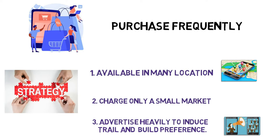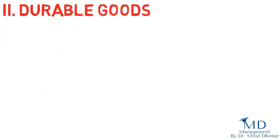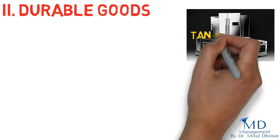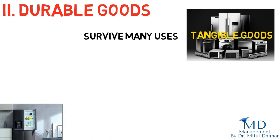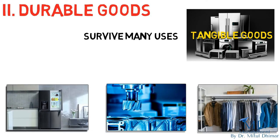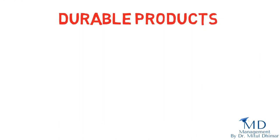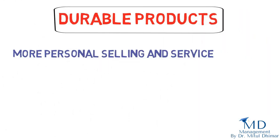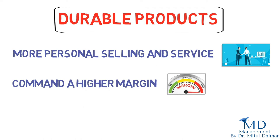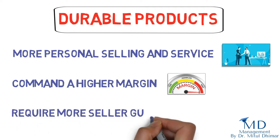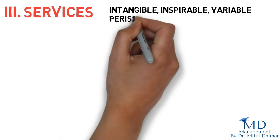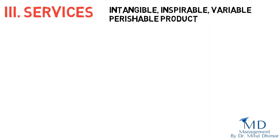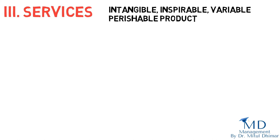Number two: durable goods. Durable goods are tangible goods that normally survive many uses, for example refrigerators, machine tools, and clothing. Durable products normally require more personal selling and service, command a higher margin, and require more seller guarantees.